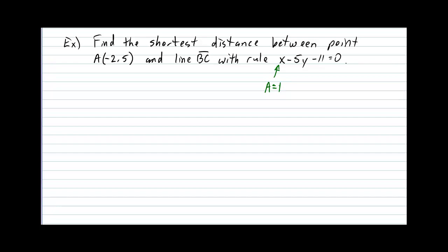The B is always the coefficient in front of the y variable, including the sign. So in our example, the B is equal to negative five.